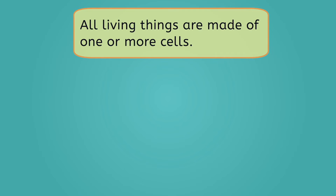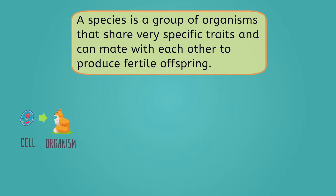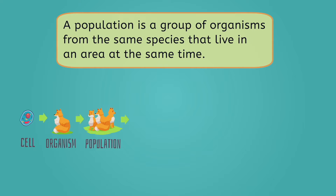All living things are made of one or more cells. Organisms are divided into specific groups called species, which can mate with each other to produce fertile offspring, like this red fox. A population is a group of organisms from the same species that live in an area at the same time. For example, all the red foxes that interact within an ecosystem form a population.